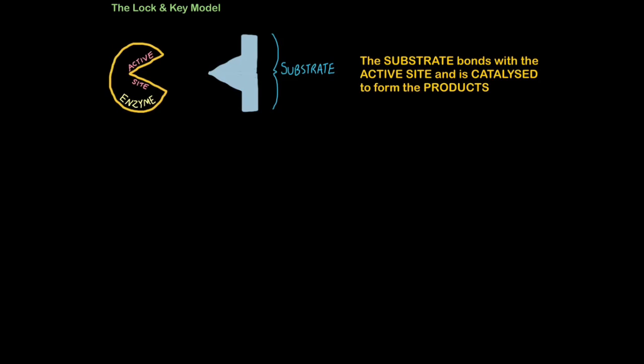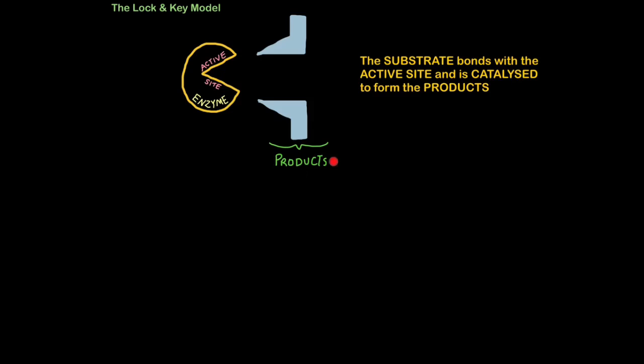Now the word complementary means fitting like two pieces of a jigsaw. So what will happen is the enzyme will bond with the substrate temporarily. The enzyme will then hold the substrate in place, putting it under a little bit of pressure, which makes it easier for other molecules such as water to collide with the enzyme and break it apart to form the products.